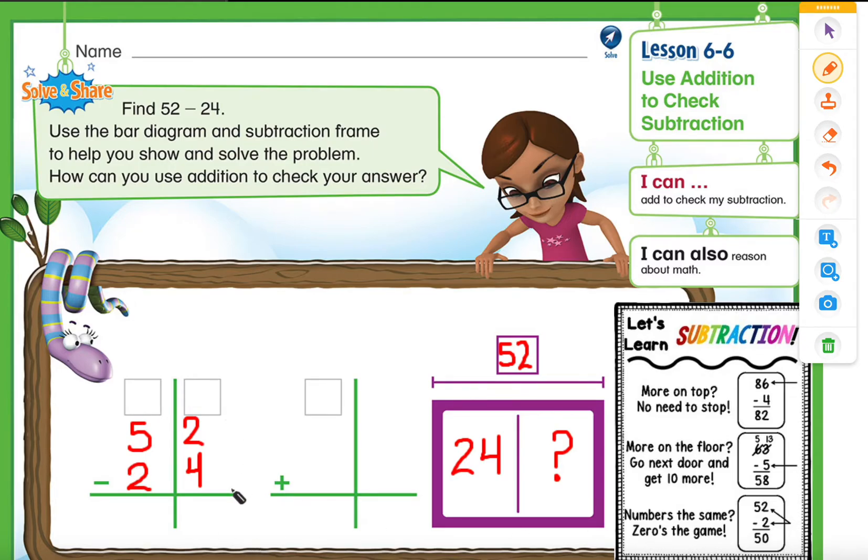So let's take a look at our current situation and see which situation we have to follow. So do we have more on top? No, 2 is less than 4. That means this situation is not going to work here. Let's take a look at the next situation. More on the floor. Yes, this is the situation we are currently facing because 4 is greater than 2. That means we have more on the floor.